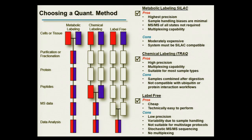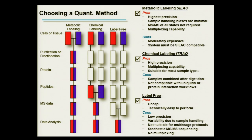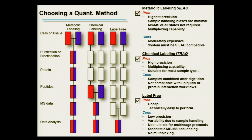The label-free approach is not something we typically prefer. The advantage is that it's cheap and easy since no isotopic labeling is required, but it has low precision, variability due to sample handling, and is not suitable for multi-stage protocols. Typically, when you come to us for a quantitative proteomics collaboration, we will talk about using either SILAC or chemical labeling.